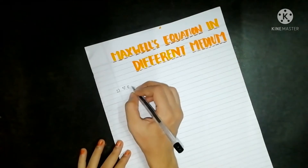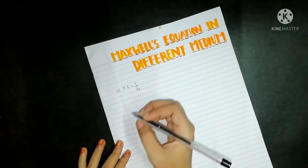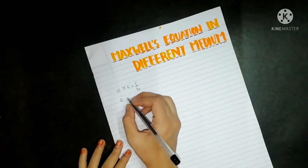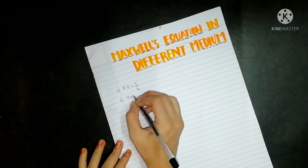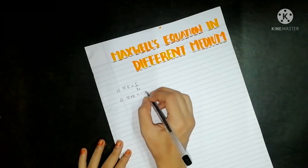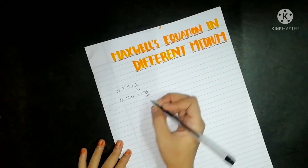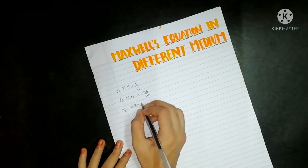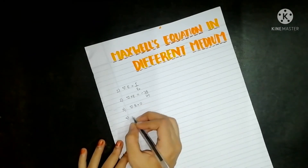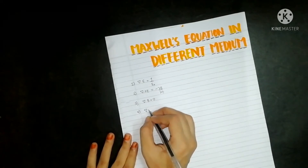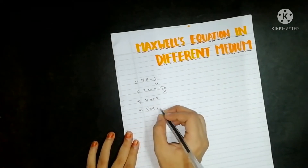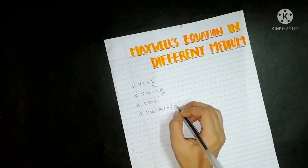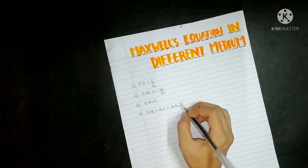The first equation is: del dot E is equal to rho by epsilon naught. The second equation is: del cross E is equal to minus dou B by dou t. The third equation is: del dot B is equal to zero. The fourth equation is: del cross B is equal to mu naught J plus mu naught epsilon naught dou E by dou t.